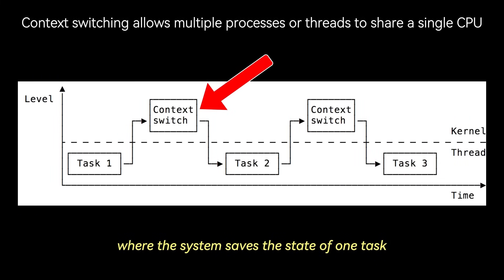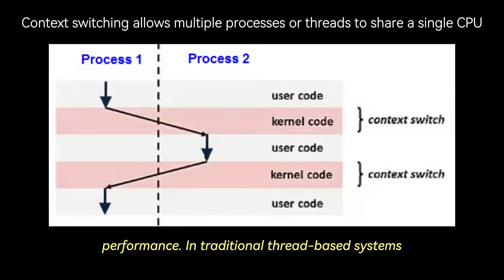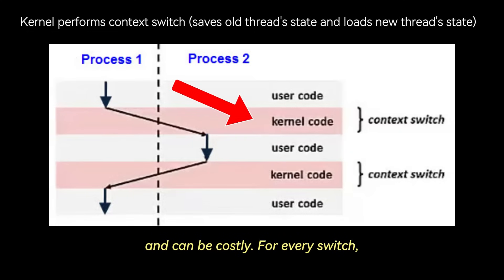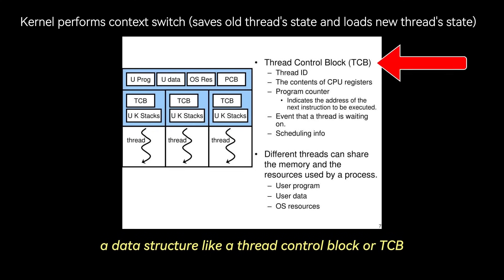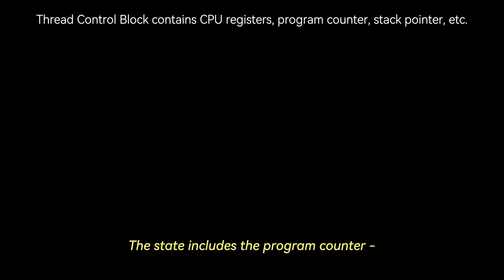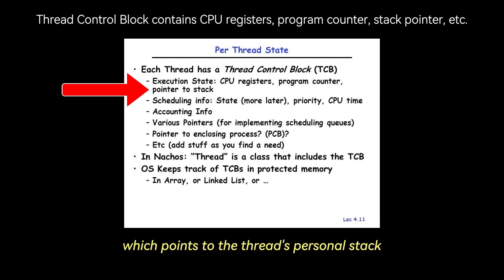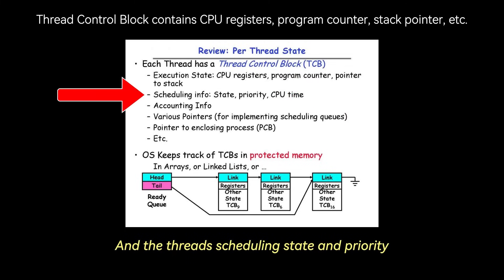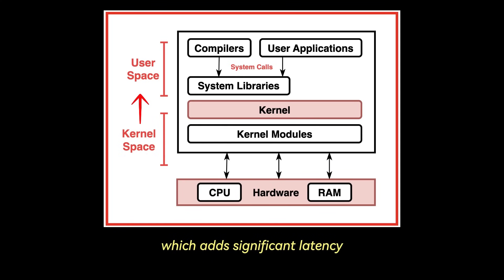Now let's talk about the cost of concurrency. Concurrent programs must manage context switching, where the system saves the state of one task to let another run. In traditional thread-based systems, this switch is managed by the OS kernel and can be costly. For every switch, the kernel must save the thread's complete execution context into a data structure like a thread control block, or TCB. This state includes the program counter, the stack pointer, the contents of all CPU registers, and the thread's scheduling state and priority. This process requires a transition from user mode to kernel mode and back, which adds significant latency.